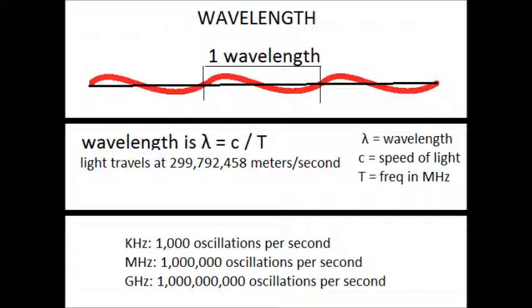The formula to find out wavelength is lambda equals c divided by T. Lambda is the wavelength, c is the speed of light, and T is the frequency in megahertz.